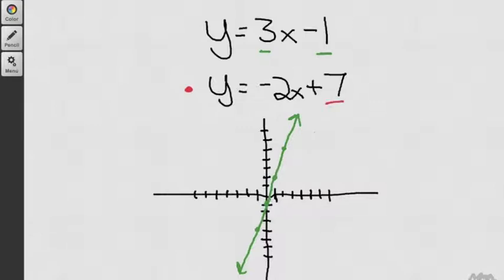The 7 tells us to start on the y-axis at 7. So up 1, 2, 3, 4, 5, 6, 7. So that's our first point. The negative 2 tells us how it grows. So it's going down 1, 2, to the right one. Down 1, 2, to the right one. And so on. We'll go ahead and connect those.